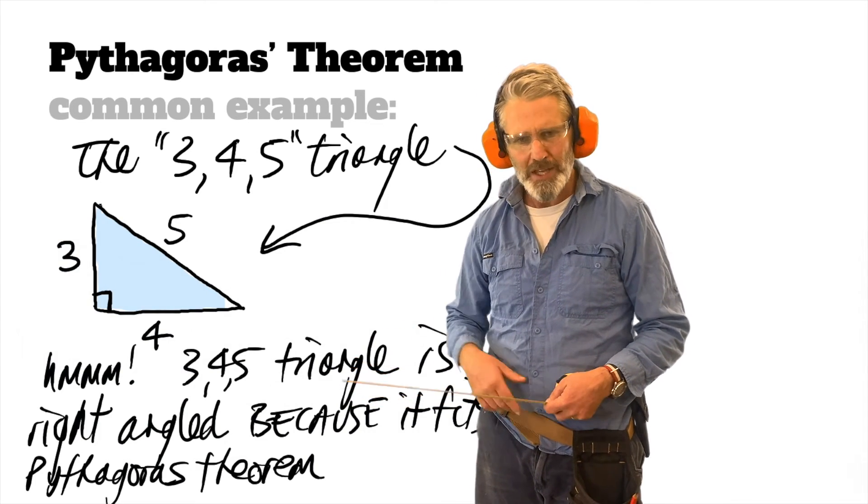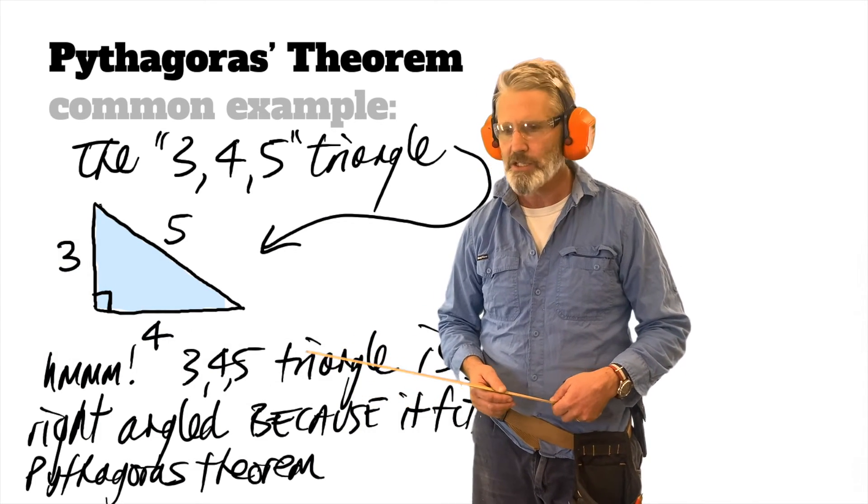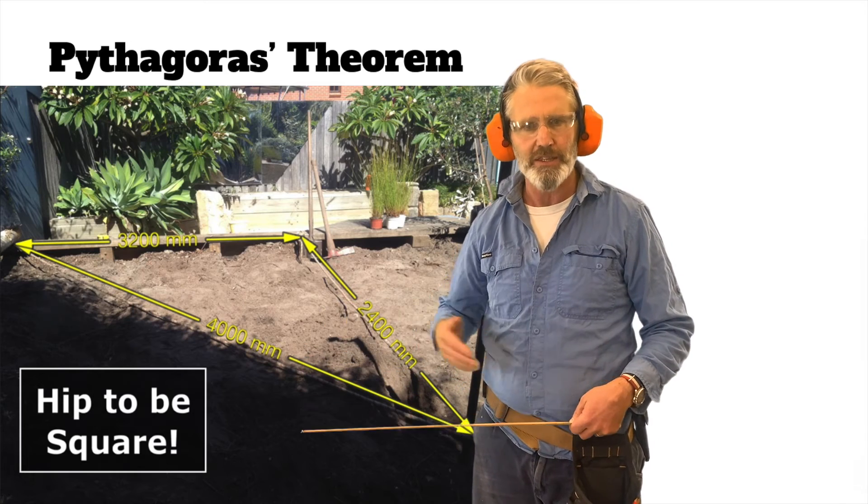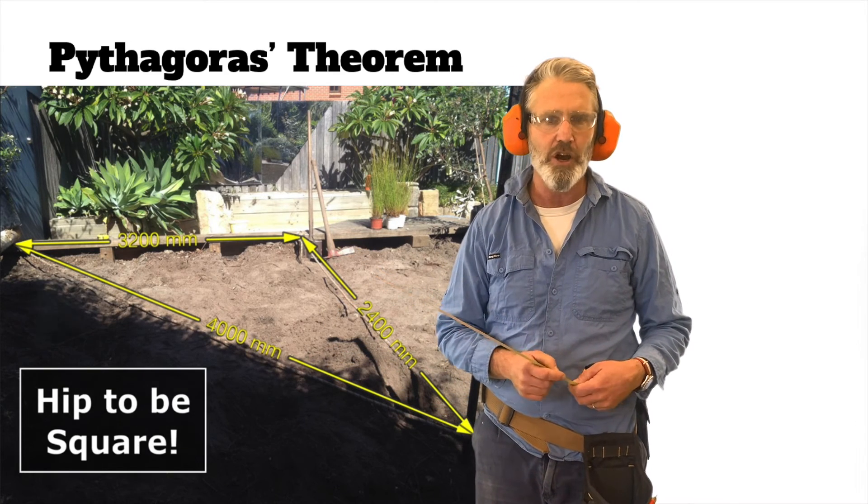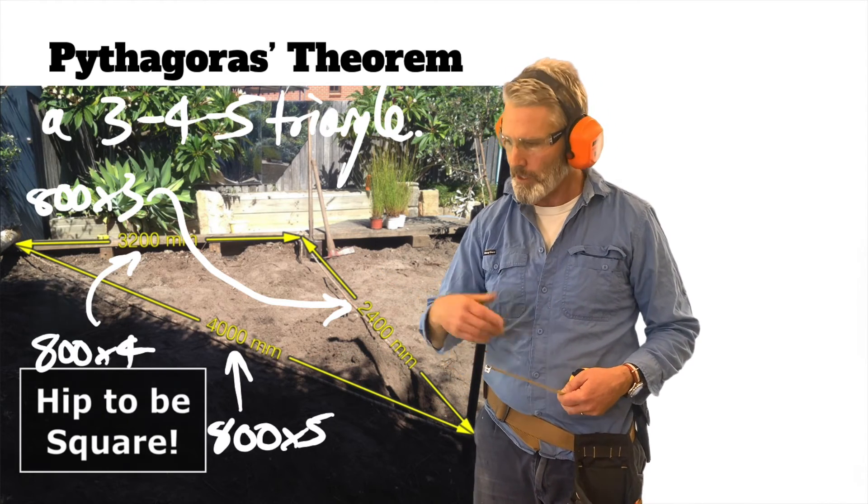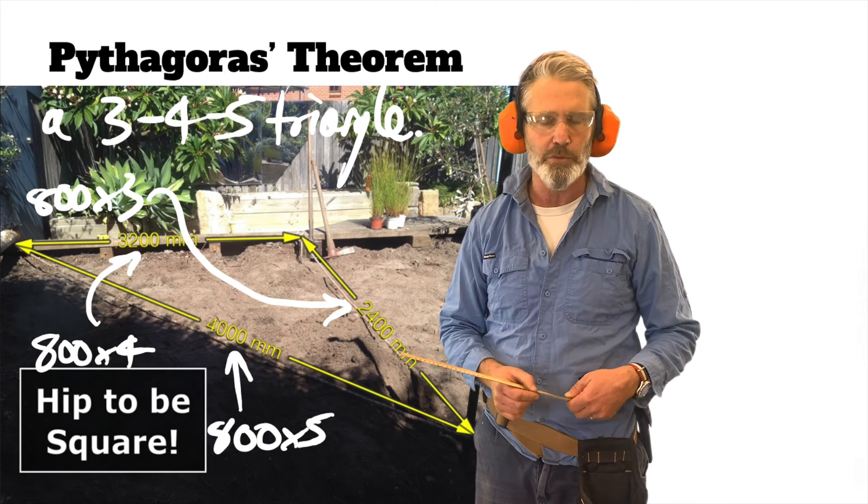Now this way of doing things is used all the time in building to check things are square. The bigger the triangle that you can make, the more square you'll be, or the more accurate you'll be.